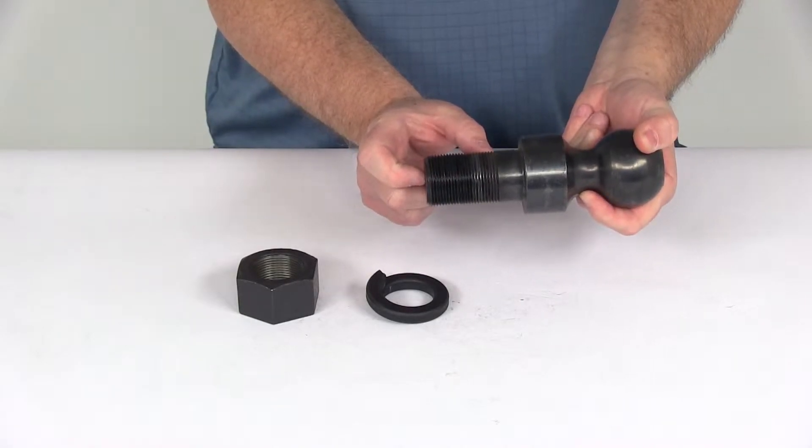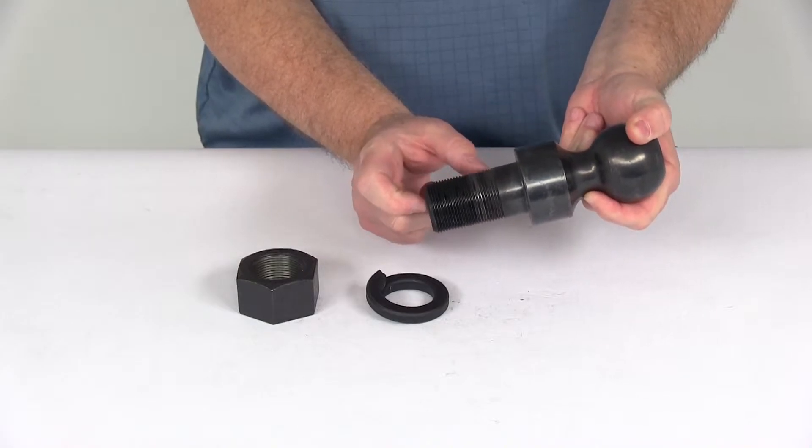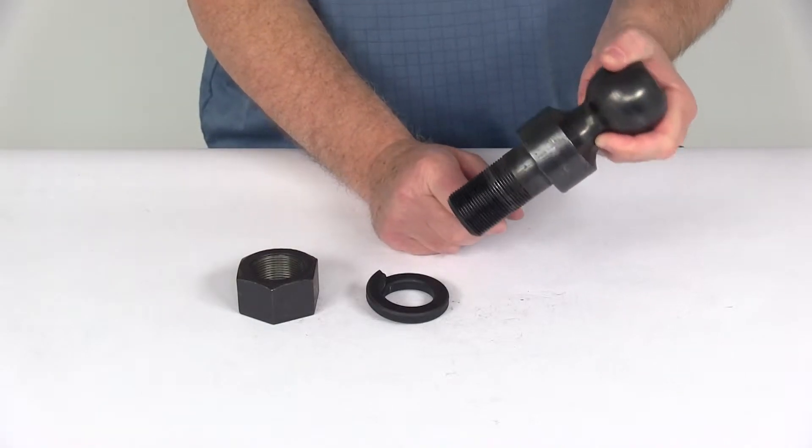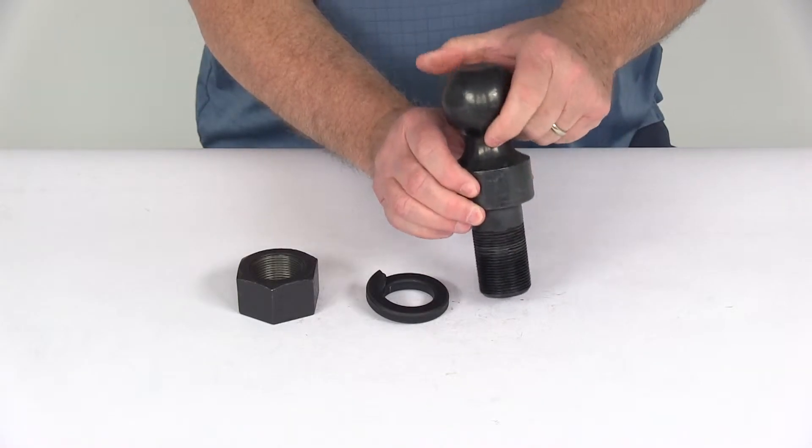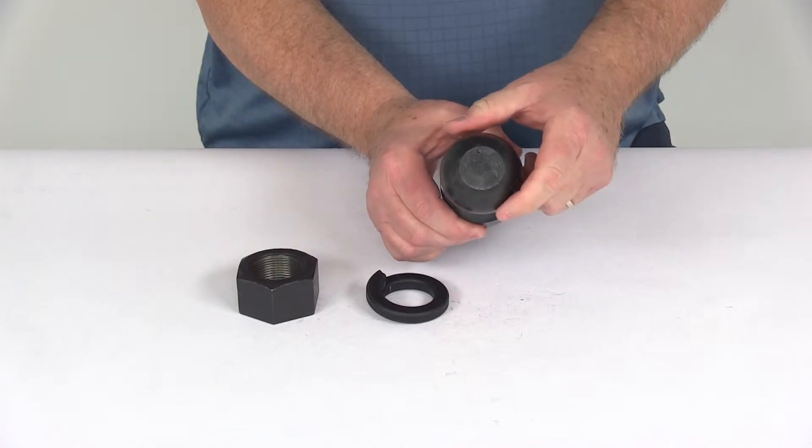The shank uses about 12 threads per inch, which provides a tight, strong grip when installed. It's made of heat-treated steel which is very durable and has a raw finish.